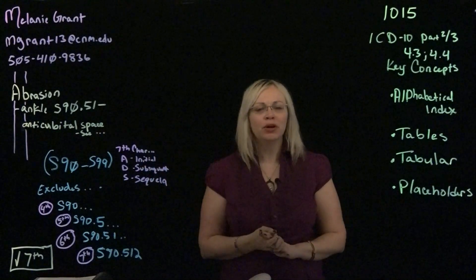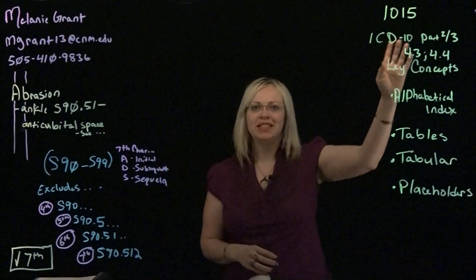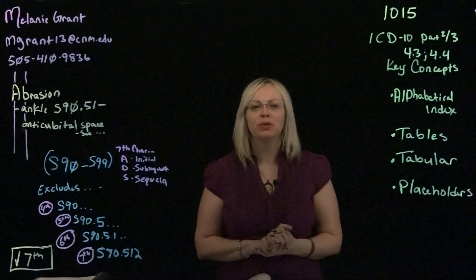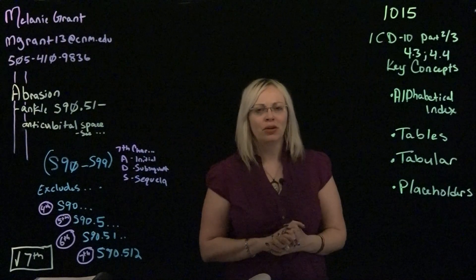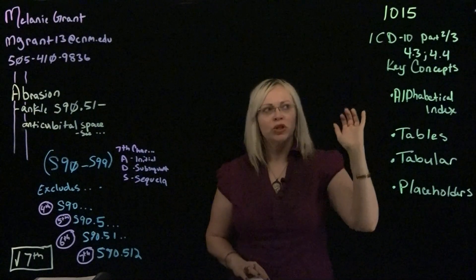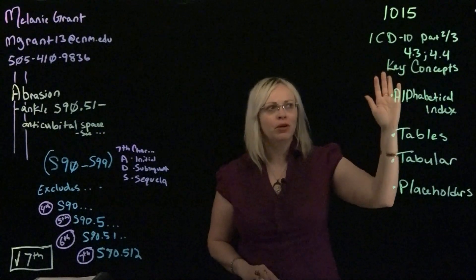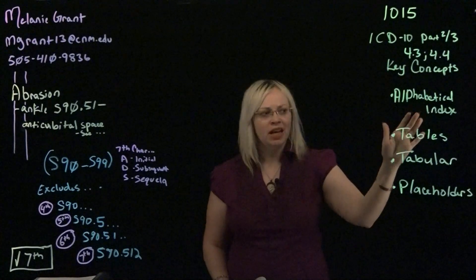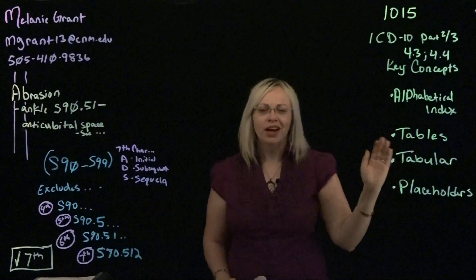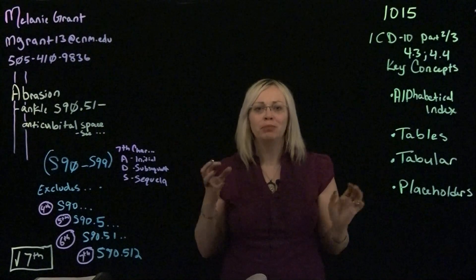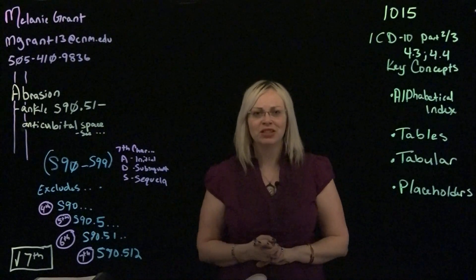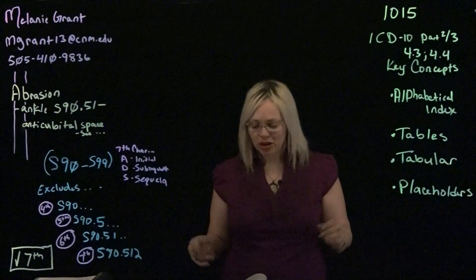Today we're going over learning module 5 with our class 10-15, where we talk about part 2 of the three parts reviewing ICD-10-CM. We're going to focus on key concepts in sections 4.3 and 4.4, covering the alphabetical index, tables within the alphabetical index, the tabular, and placeholders and how to build the code, which you'll be doing next week as well as some activities for this week.